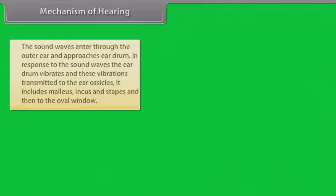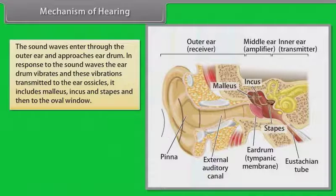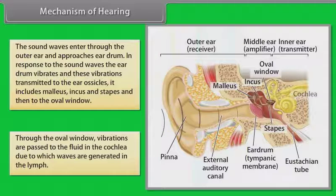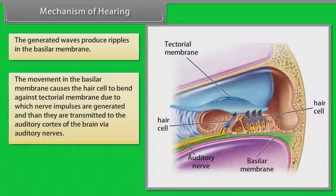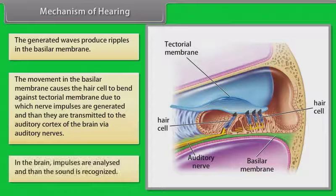Sound waves enter through the outer ear and approach the eardrum. In response to the sound waves, the eardrum vibrates and these vibrations are transmitted to the ear ossicles — malleus, incus and stapes — and then to the oval window. Through the oval window, vibrations are passed to the fluid in the cochlea, generating waves in the liquid. The generated waves produce ripples in the basilar membrane. The movement of the basilar membrane causes hair cells to bend against the tectorial membrane, generating nerve impulses that are transmitted to the auditory cortex of the brain via auditory nerves. In the brain, impulses are analysed and the sound is recognized.